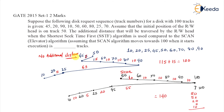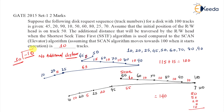SSTF is actually taking 10 tracks less than SCAN. So the additional distance traveled by SSTF compared to SCAN is zero — in fact, it is negative 10. The correct answer is no additional distance, or zero additional tracks.